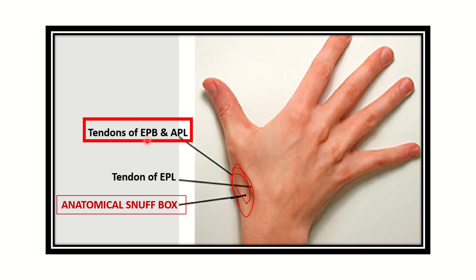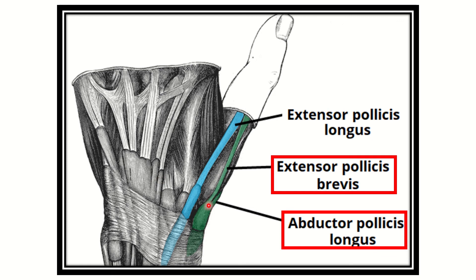So anterolaterally, the boundary is formed by abductor pollicis longus (APL) and extensor pollicis brevis (EPB). On the other hand, the posteromedial boundary — if we keep our hand in anatomical position — is formed by extensor pollicis longus. In this picture it is more clear that the anterior lateral border is bounded by abductor pollicis longus and extensor pollicis brevis, while the medial and posterior border is formed by extensor pollicis longus.